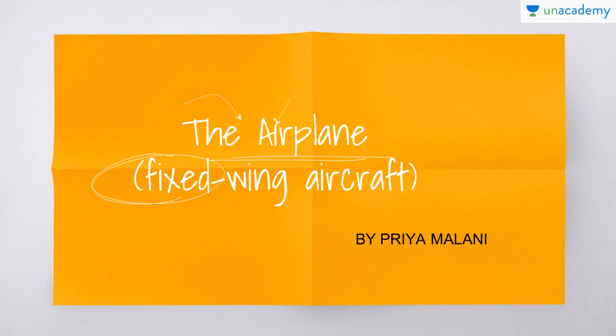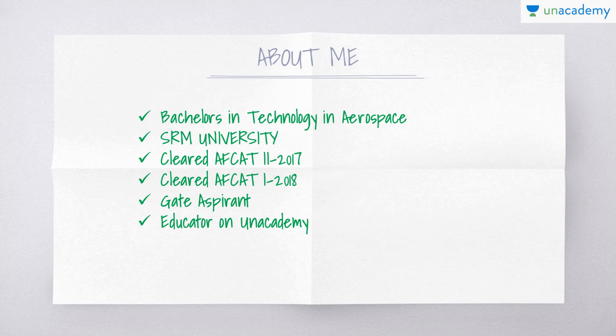Welcome to the first lesson of my course Basics to Flight Mechanics. This lesson is about the airplane — the fixed-winged aircraft. Our attention will be completely centered on the class of aircraft known as airplanes, that is fixed-wing aircraft, and not any others such as helicopters or movable-wing aircraft. We are only doing fixed-wing aircraft.